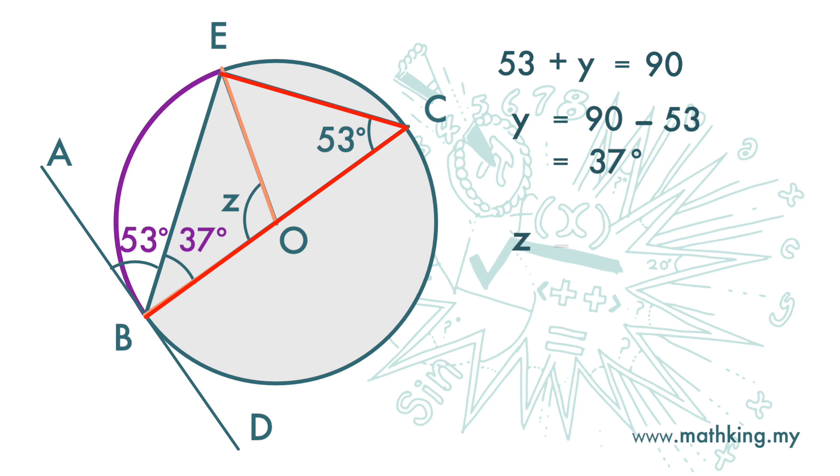So z is 53 times 2, because we have learned that the angle at center is 2 times the angle at the circumference. And we get 106 degrees.